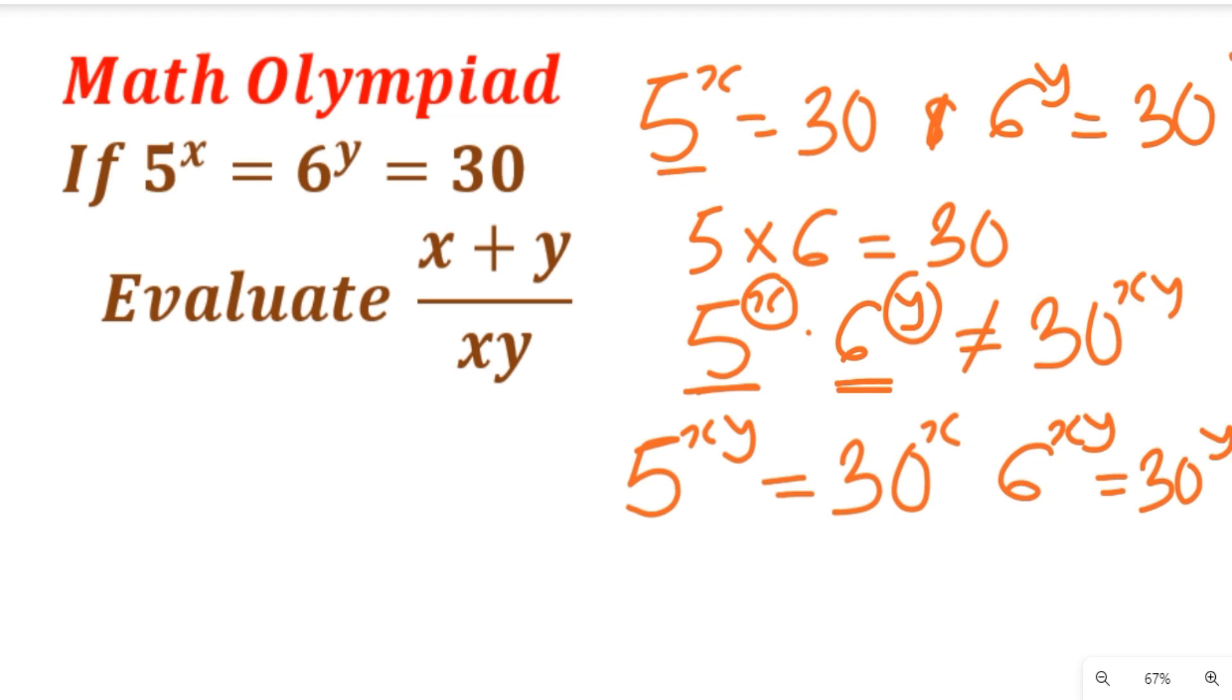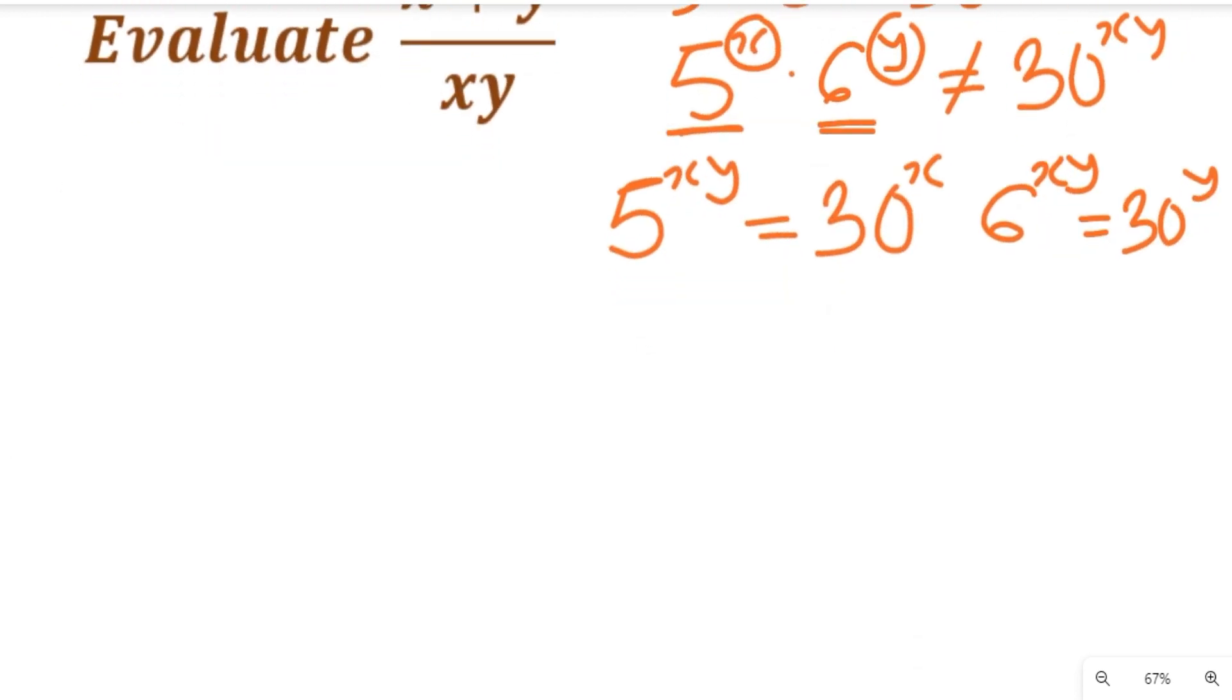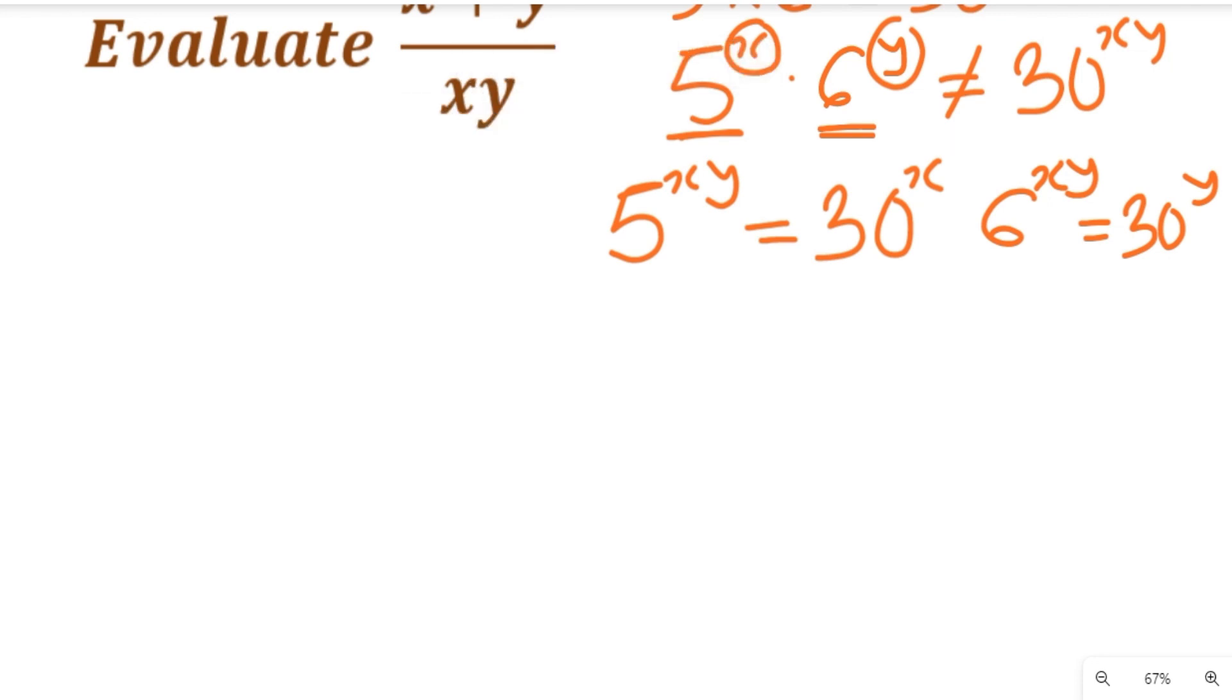I think this is a bit reasonable. If we apply that logic here, we can now simply say that 5 to the power of xy can now multiply 6 to the power of xy because they have the same exponent, and this can be equal to 30 to the power of x multiplied by 30 to the power of y.